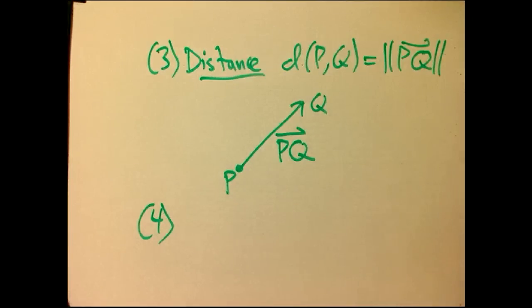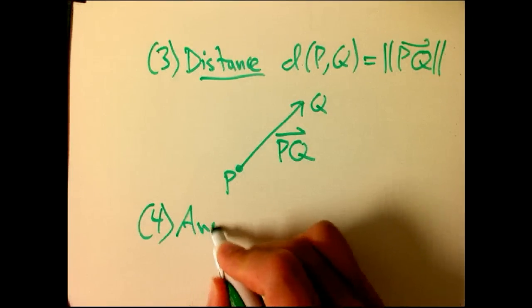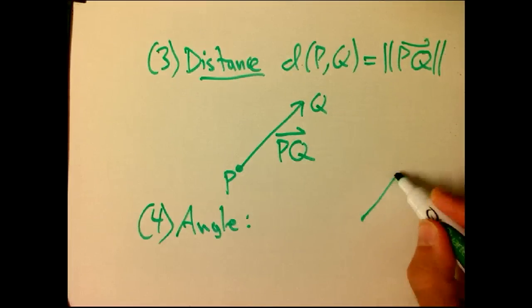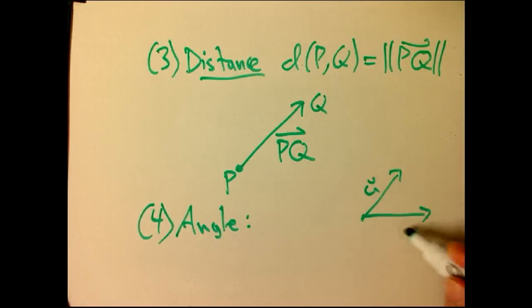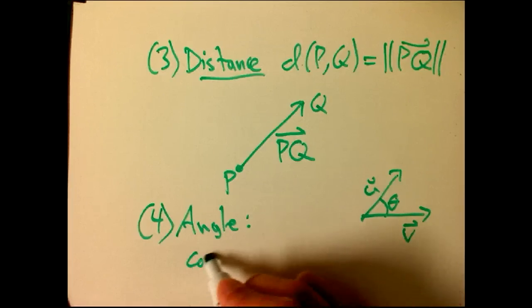Alrighty. So far, all we've done is take a dot product of a vector with itself. When you have two vectors, say u and v, you might want to know the angle between these guys.